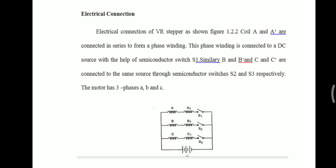When it comes to the electrical connection of the VR stepper motor, coils A and A' are connected in series to form a phase winding. This phase winding is connected to a DC source with the help of semiconductor switch S1. Similarly, B and B', and C and C' are connected to the same source through semiconductor switches S2 and S3 respectively.